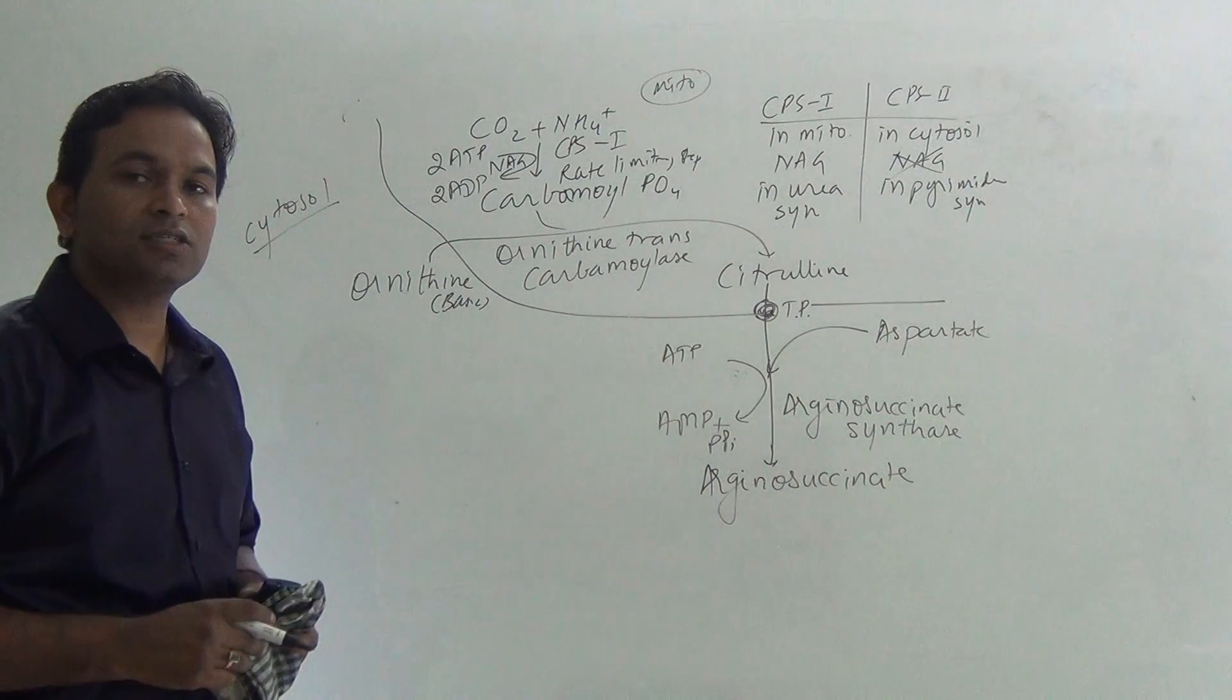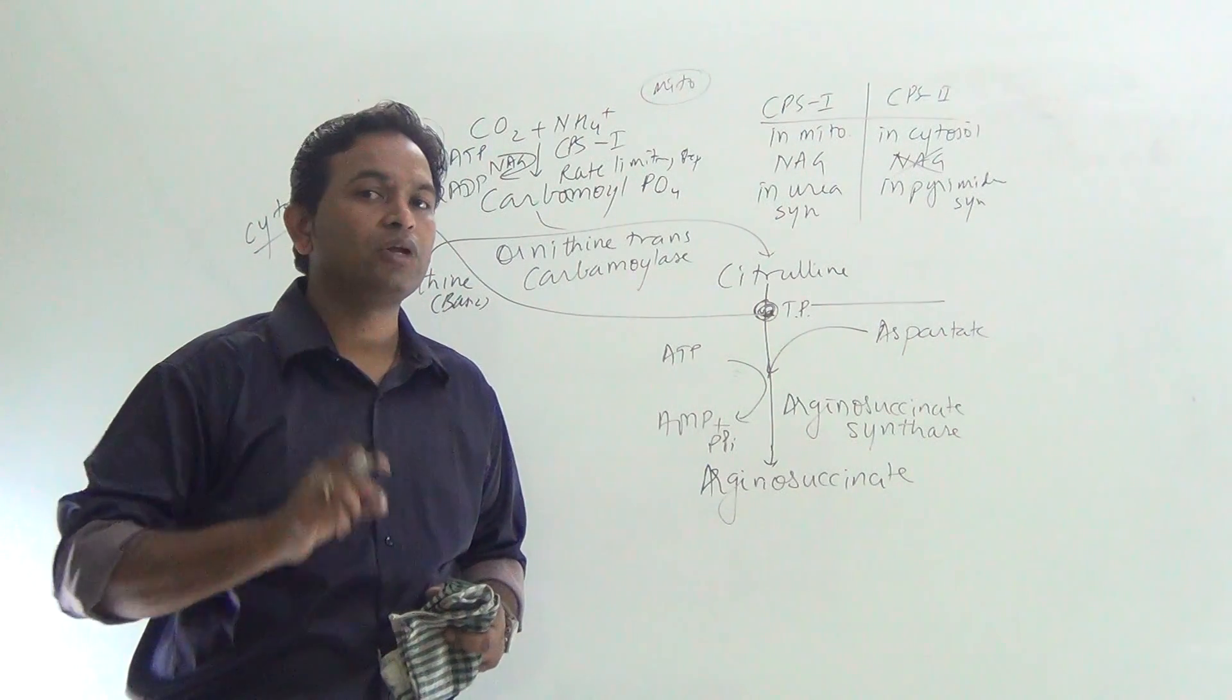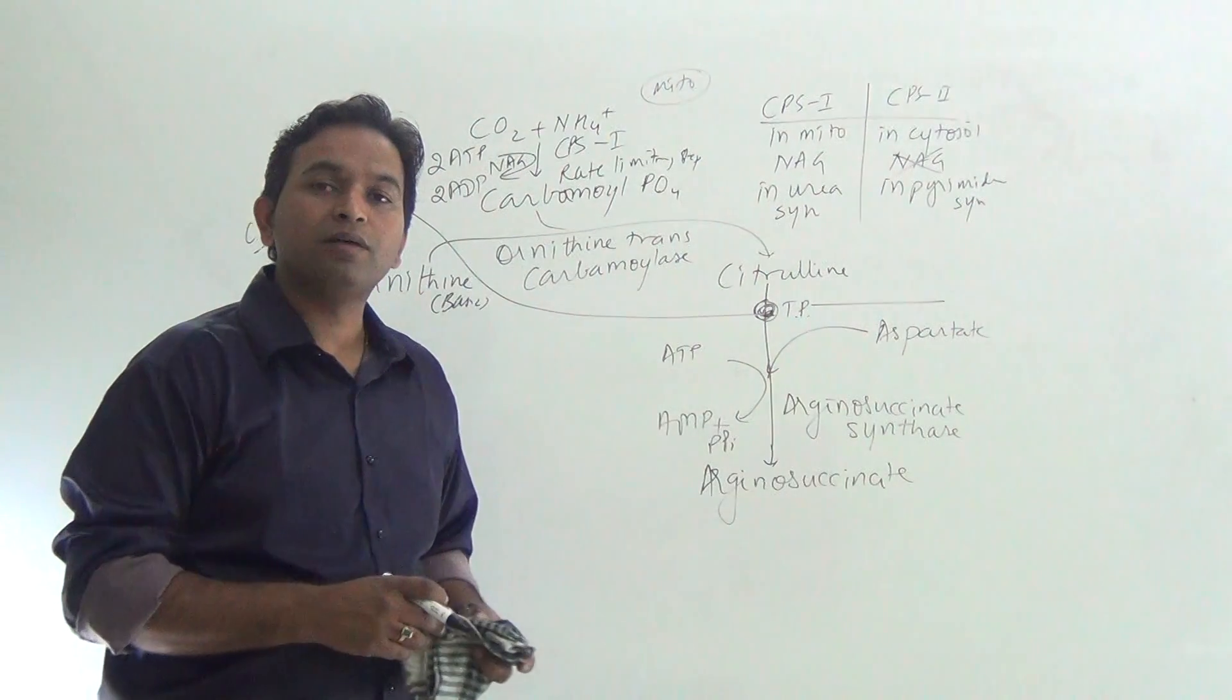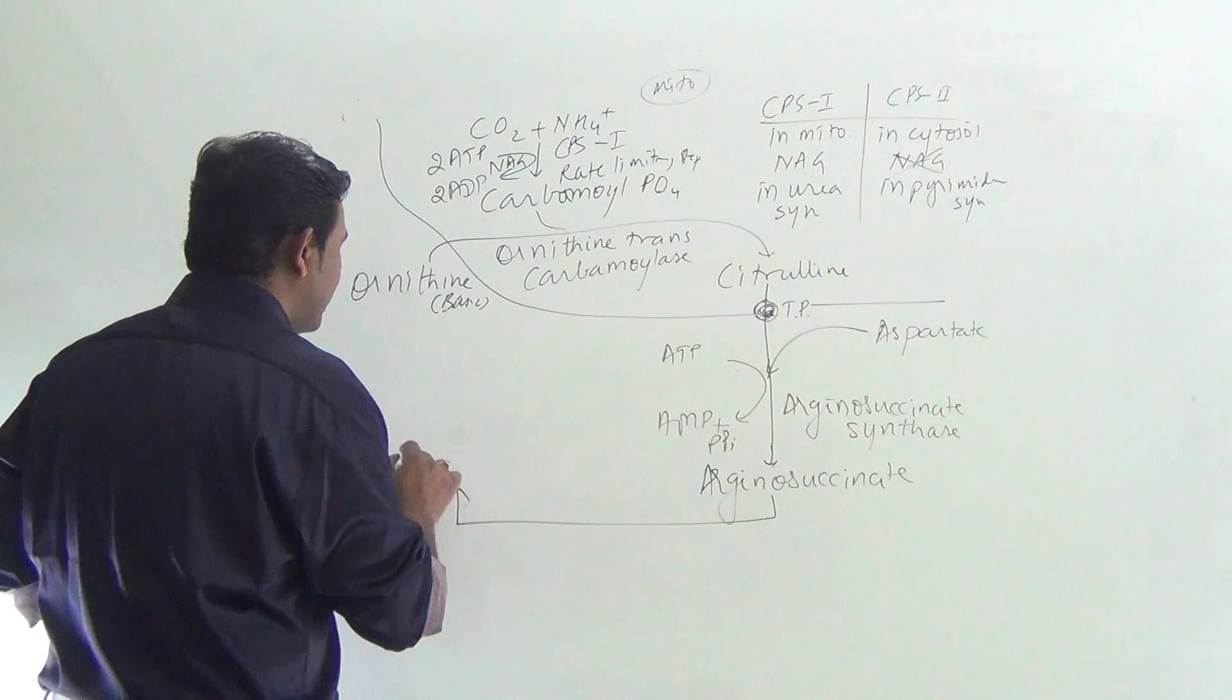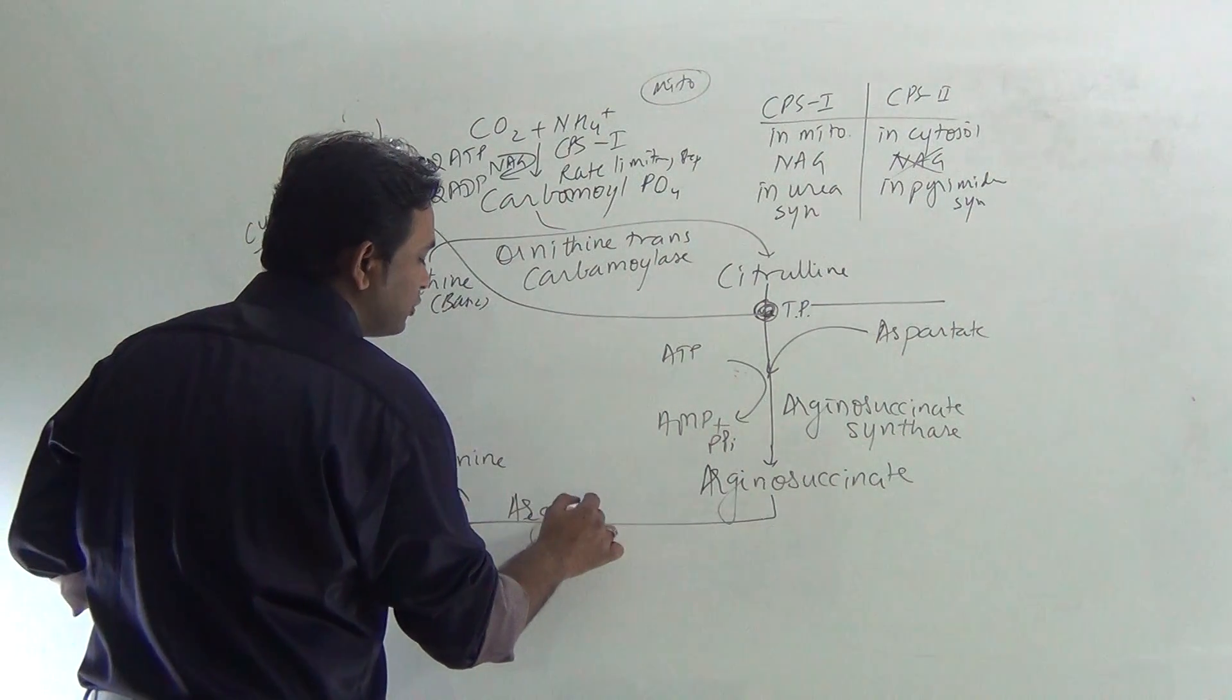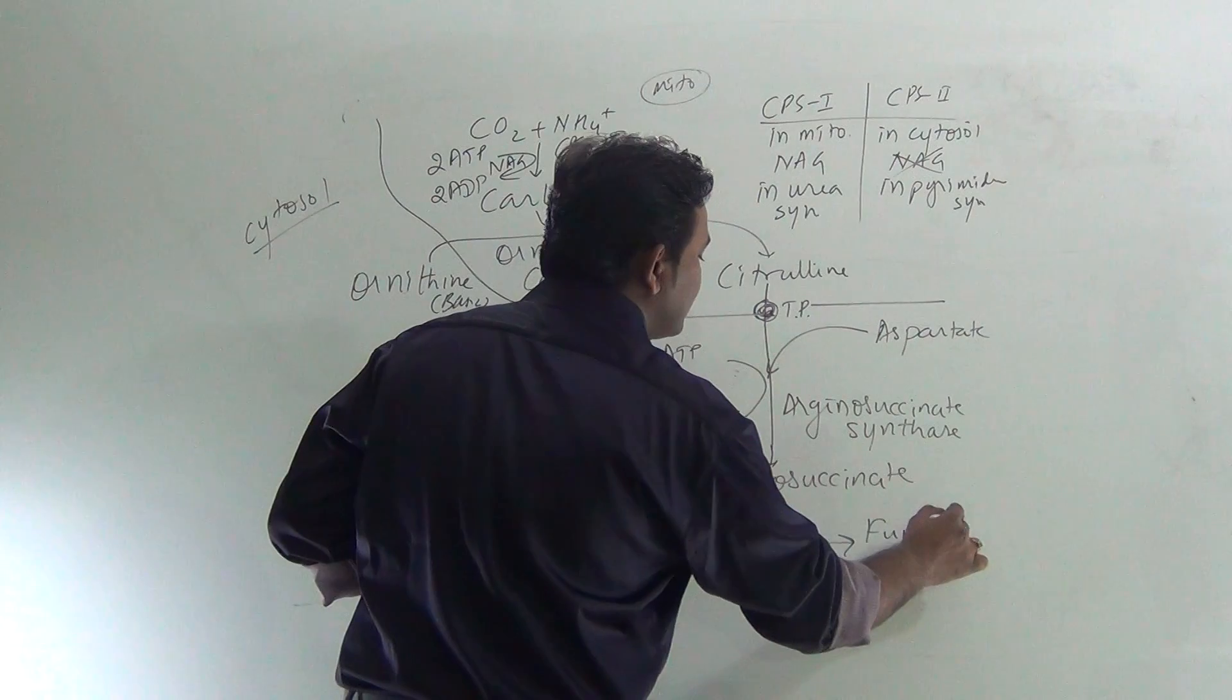Actually, aspartate is another ammonia molecule donor. One molecule of urea involves two molecules of ammonia. One ammonia molecule is added freely, while another one is donated by the molecule of aspartate. This argininosuccinate is converted to arginine by the action of enzyme argininosuccinase. Also, one molecule of fumarate is released.